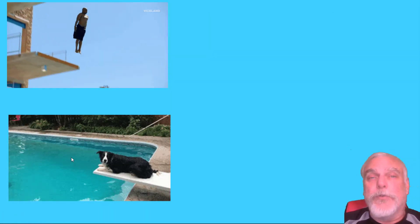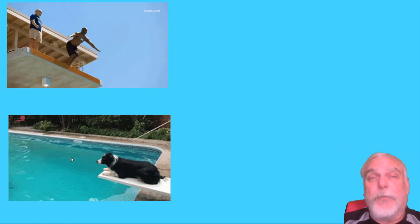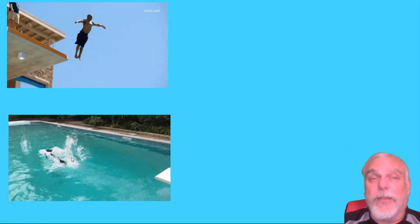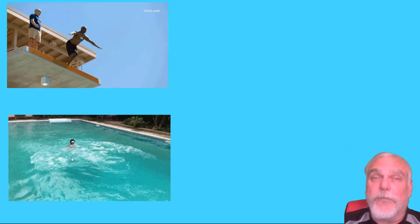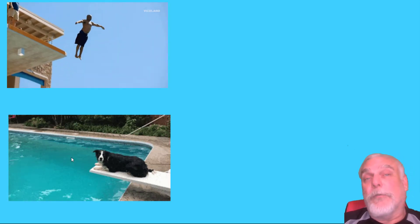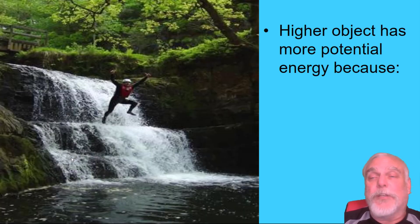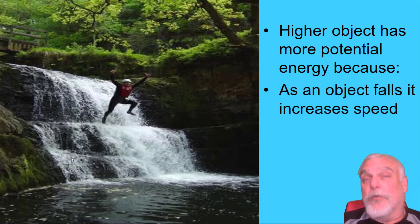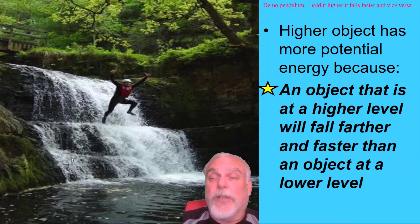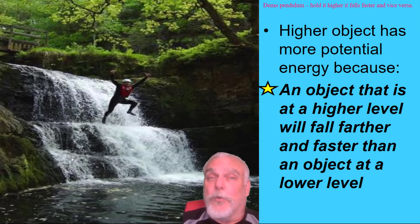If we have two divers — one from the high dive and one from the low dive — the diver from the high dive is going to be hitting the water at a much greater speed. A good rule of thumb: the higher object will have more potential energy because as it falls it increases in speed. An object at a higher level will fall farther and faster than an object at a lower level.